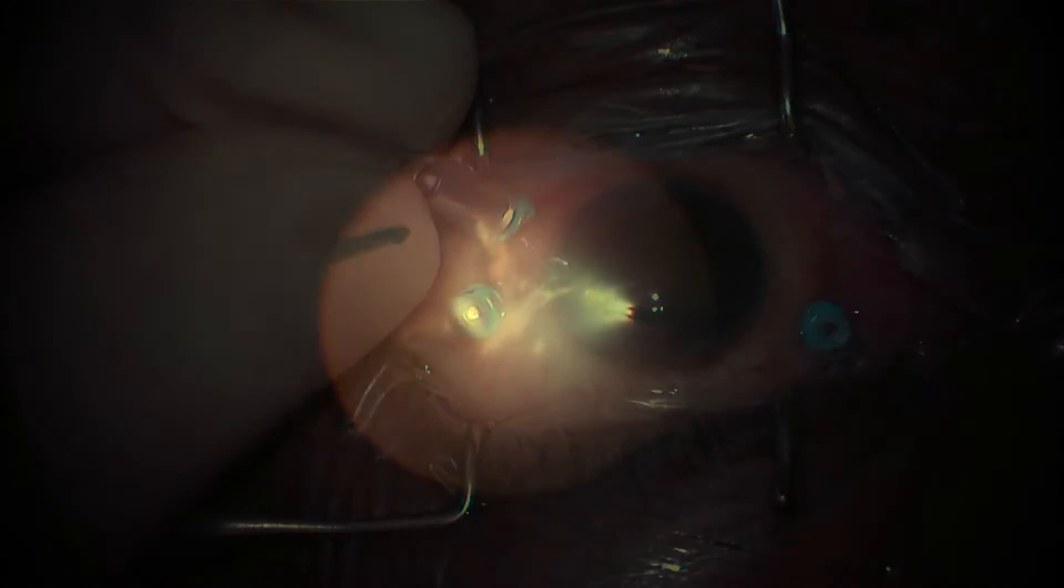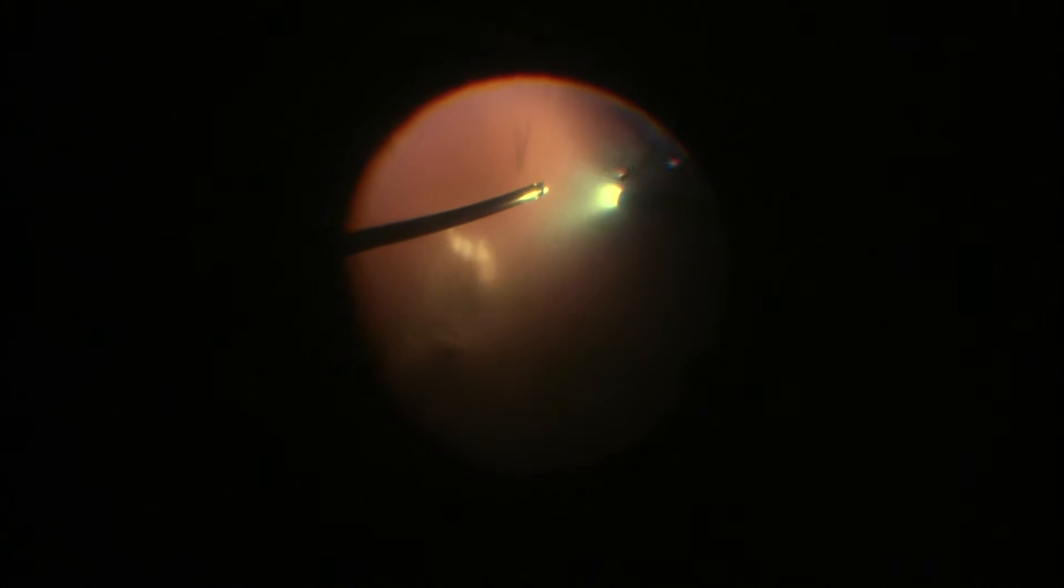Here you see that we're engaging the infusion in the inferior temporal port, and we're going to start looking inside. Right away, we're going to notice you can't see very much. There's a dense vitreous hemorrhage over here that's obscuring the view to the retina. And so just like we can't see directly to the retina, the patient's not going to be able to see very much out of this eye as well.